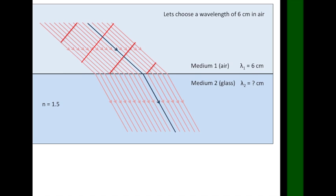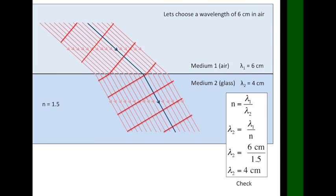In the glass side, it's a similar story. Mark on the wavefronts, here we have two of them, so we can actually measure the wavelength in the glass. Turns out here we have 4 cm, and we can check that using Snell's law just to be sure.